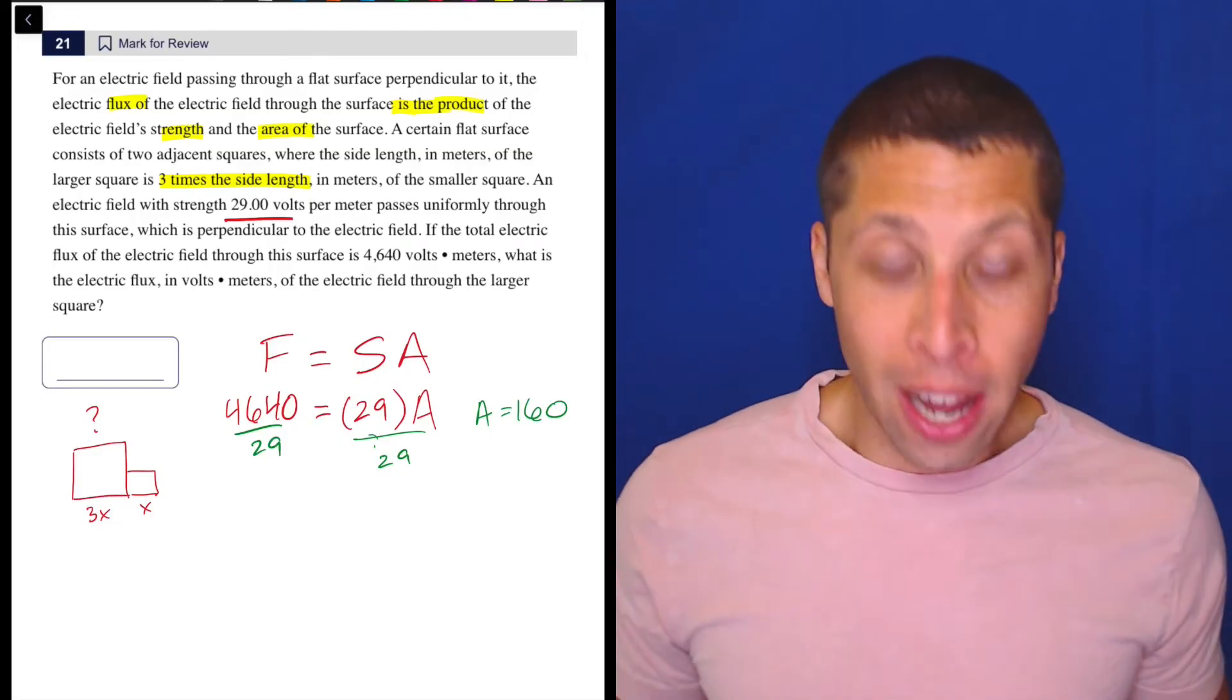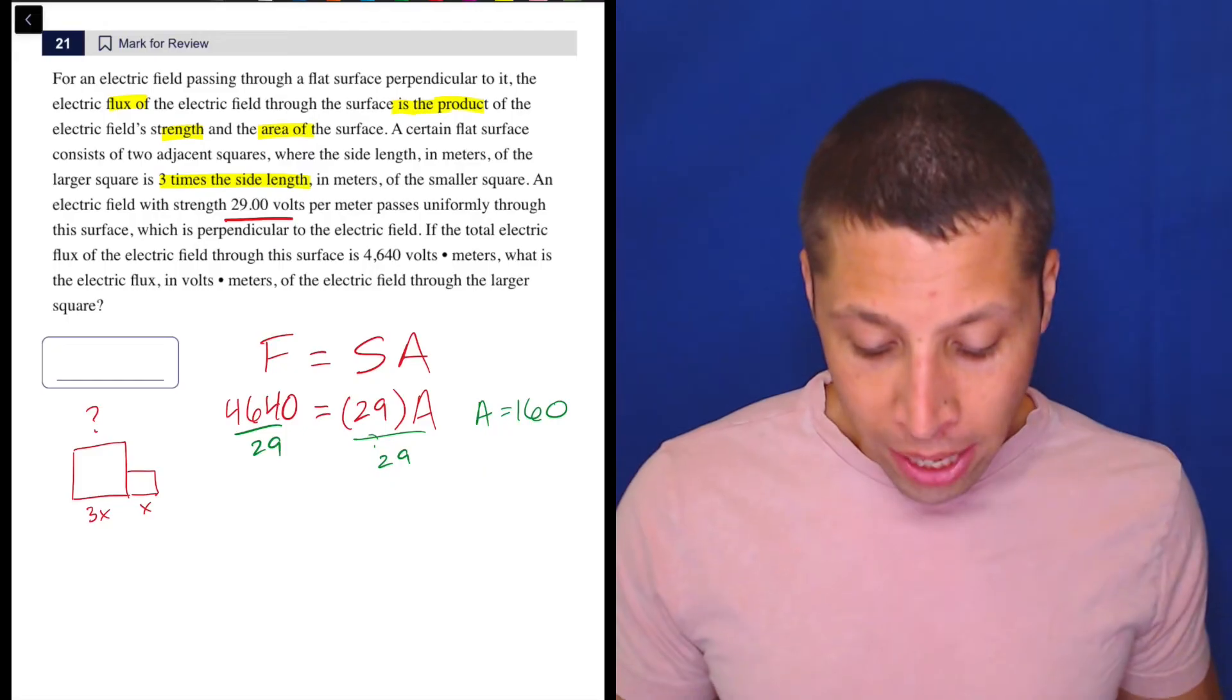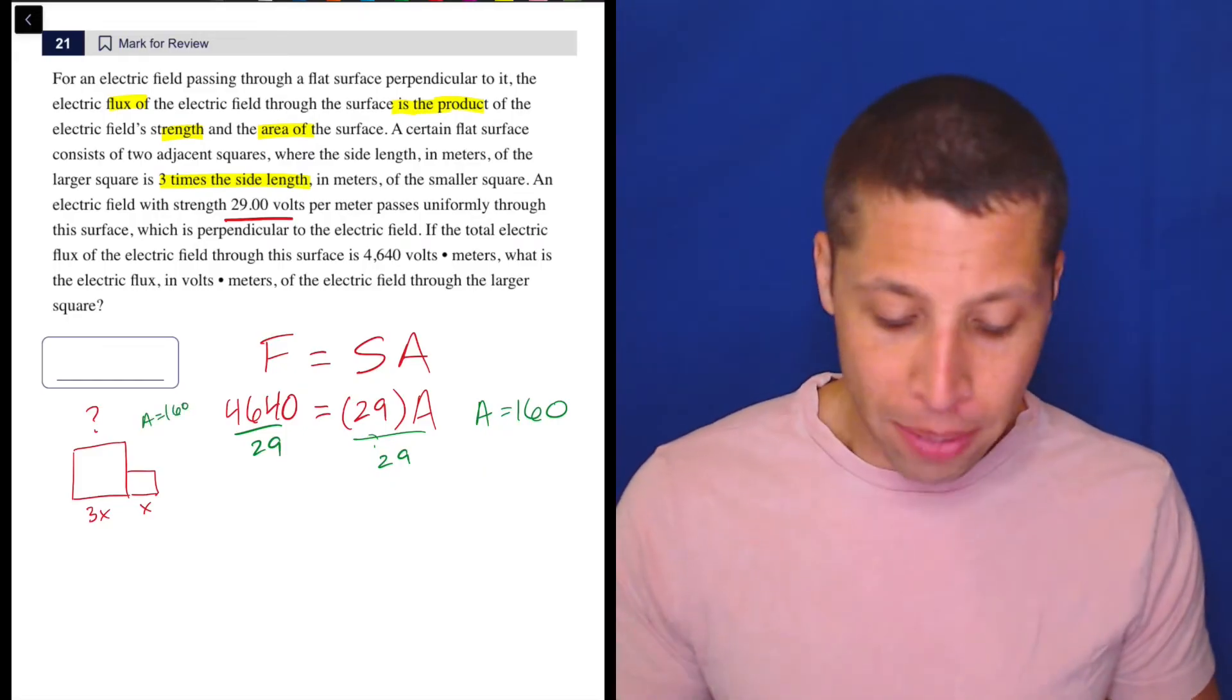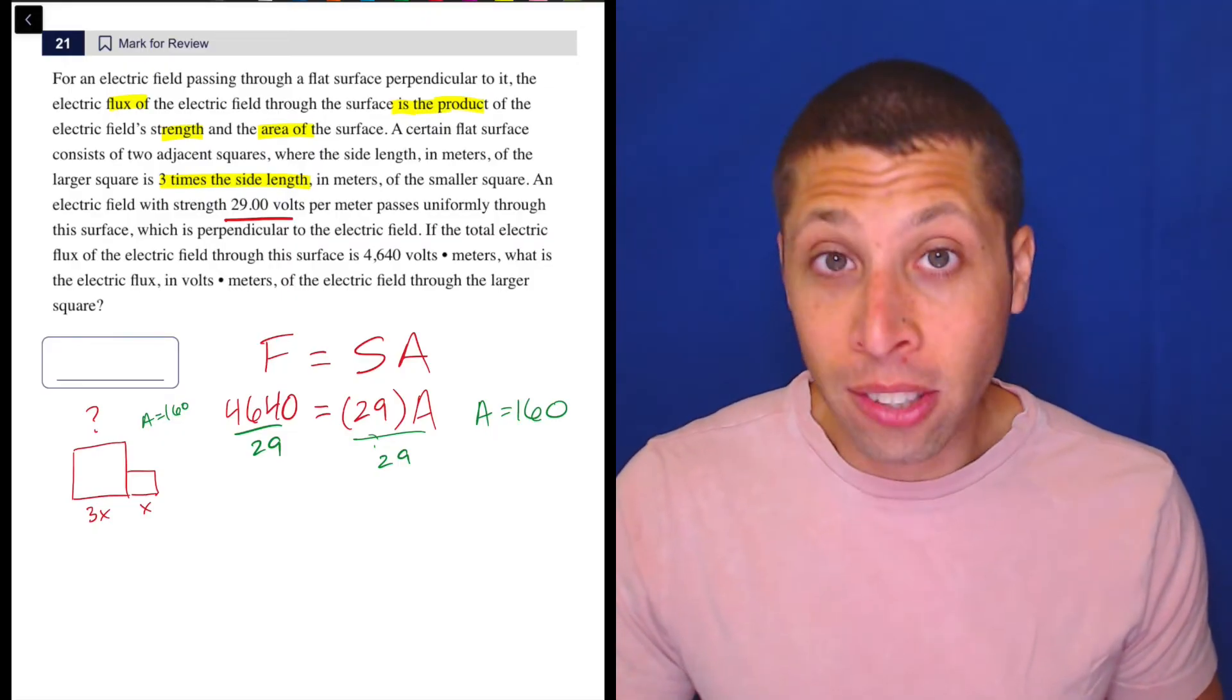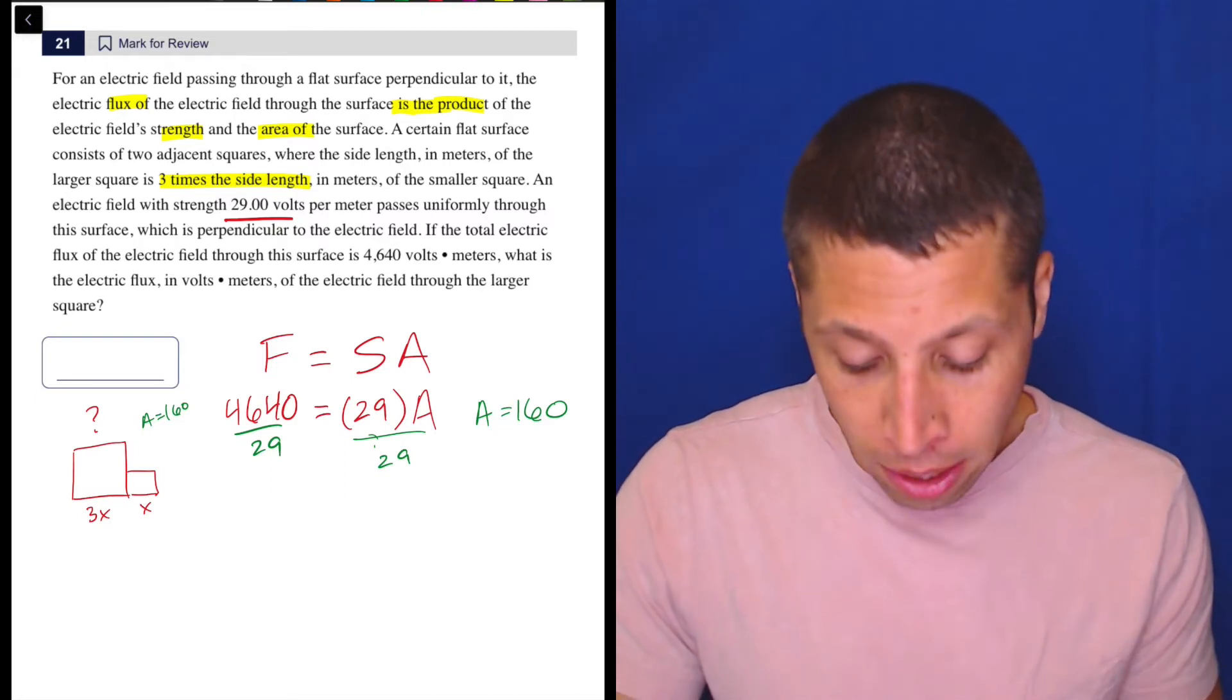All right, now I'm stuck, but okay, well, I have these two squares. So the area of these squares is 160. Well, what could that mean? Maybe this is where I have to use the X's. I could maybe try to guess what the value of X is, but I could also just create a formula.